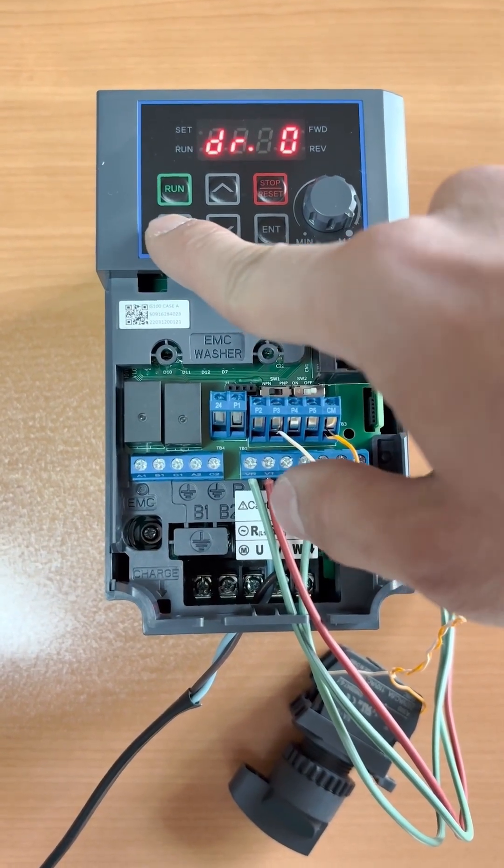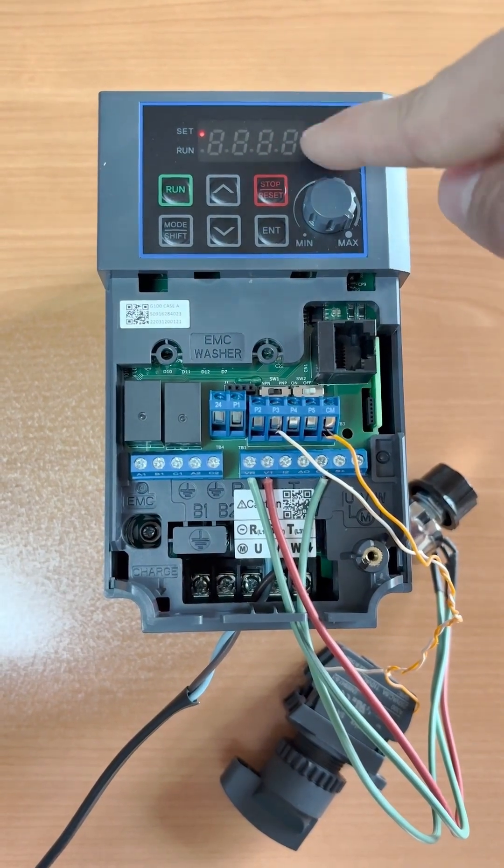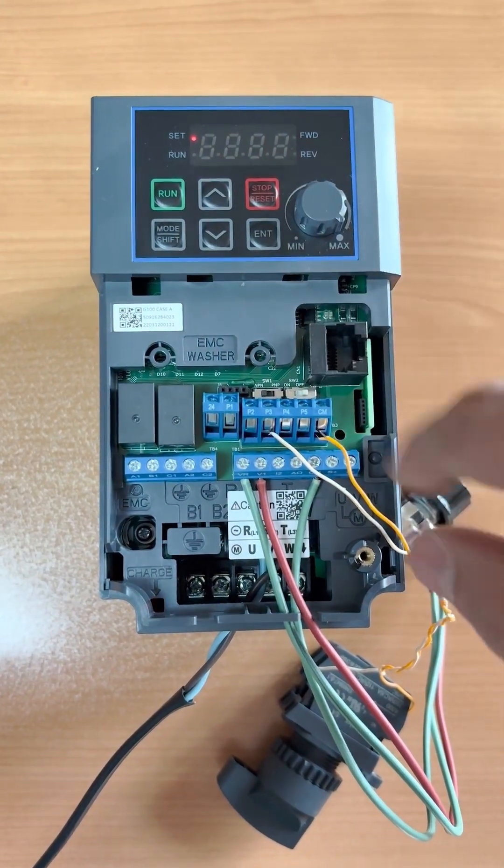The parameter related to our remote mode is BA04, which is related to the start command. In our remote mode we also want the start command to be through the keypad.